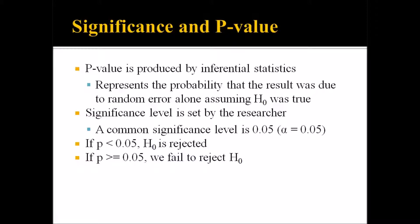Significance level is something different. The terms p-value and significance level are often used interchangeably in counseling research, but they do not mean the same thing. The p-value is produced by the statistic, while the significance level is set by the researcher. A common significance level in our field is 5% or 0.05. We also denote the significance level by alpha — so in this case, alpha equals 0.05 or 5%.